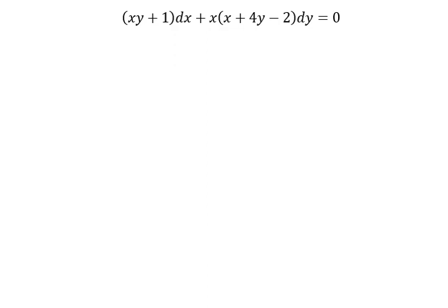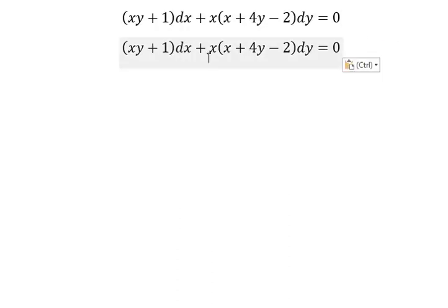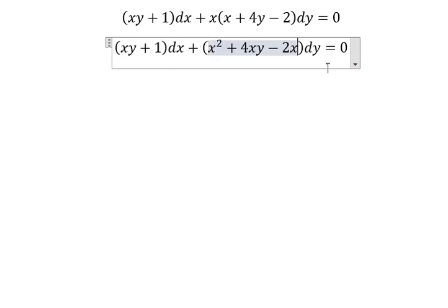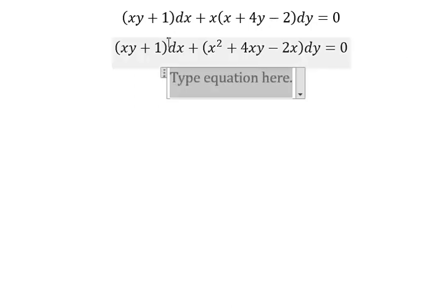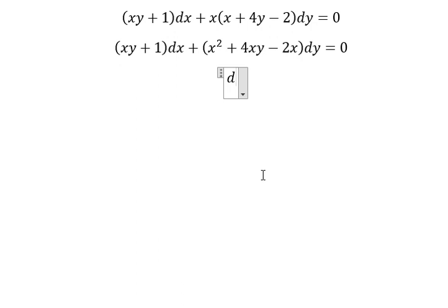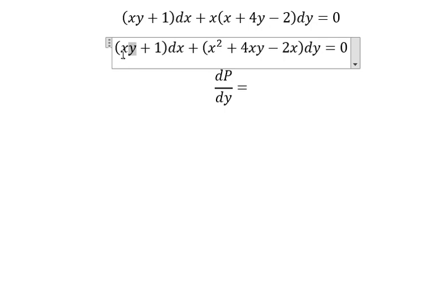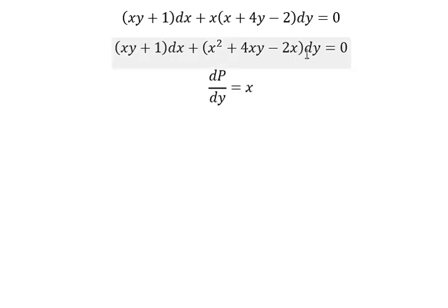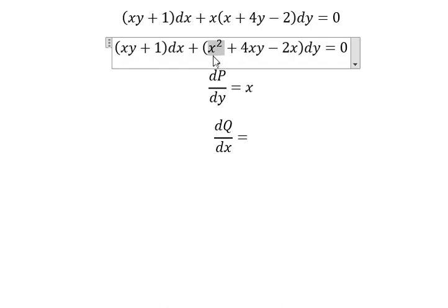Hey guys, welcome back to my channel. Today I want to show you how to answer this problem. We multiply this one with this one. Next, we have S, that means we need to do the first derivative of B with respect to Y. So we have number 1. Then, that is about the constant, so we got number 0. We have dY, that means we need to do the first derivative of Q with respect to S, so that is about 2S, and this one is about number 1.